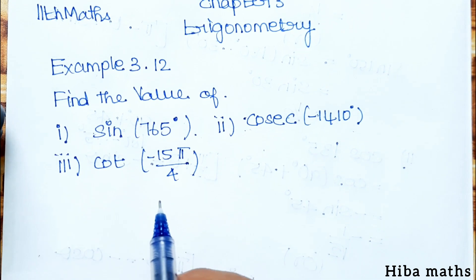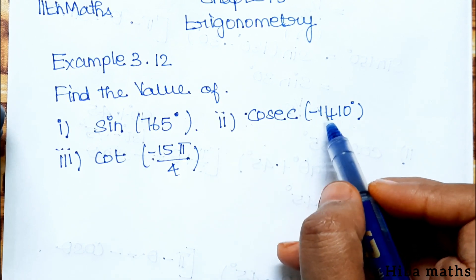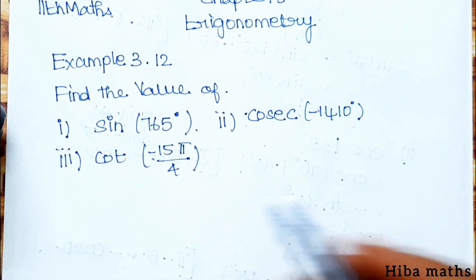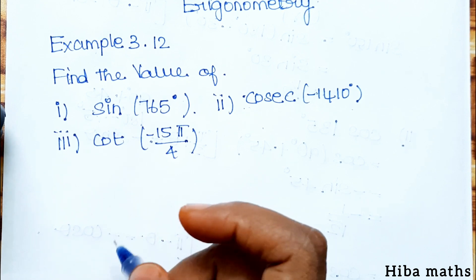Find the value of: (i) sin 765 degree, (ii) cosec minus 1410 degree, (iii) cot minus 15 pi by 4.